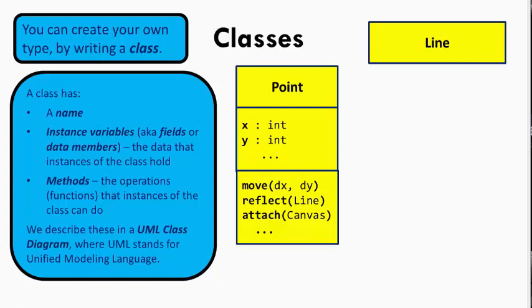An object knows things, that is, it has data, described by the instance variables of the class to which the object belongs. An object can do things, as described by the methods of the class to which the object belongs.